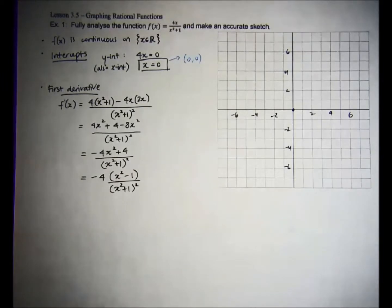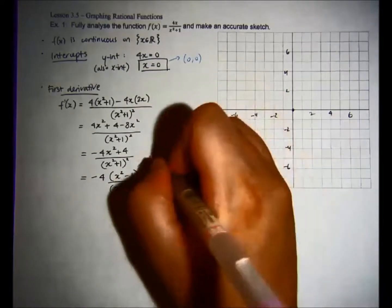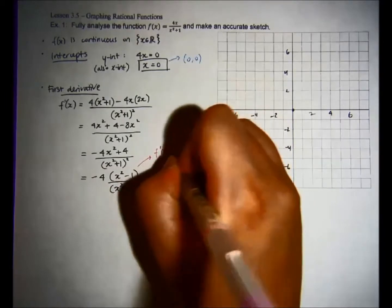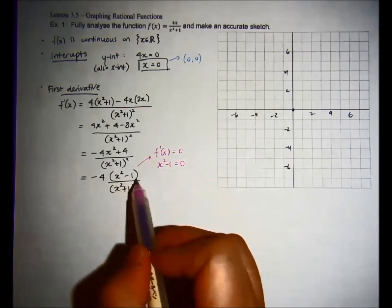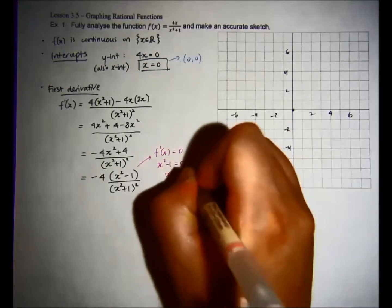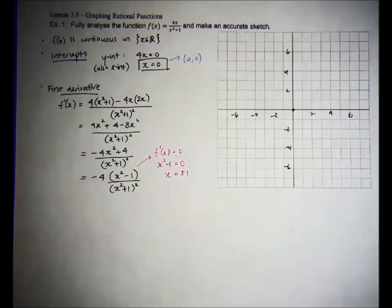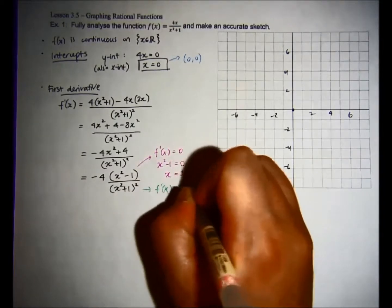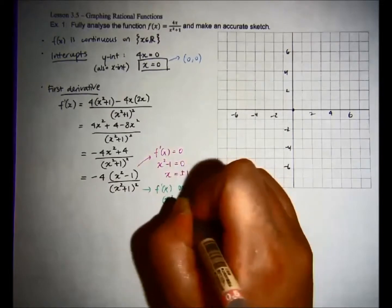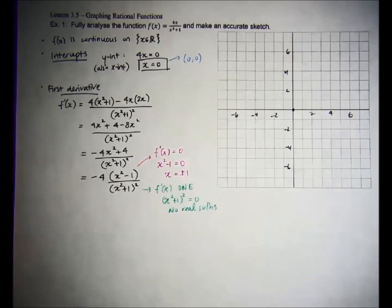At this point I want to figure out where my critical points are. Critical points exist where f prime equals 0, meaning the numerator has to equal 0. Negative 4 is just a coefficient, so we want x squared minus 1 equals 0, which means x equals plus or minus 1. The denominator x squared plus 1 squared will never equal 0, so our only critical points are at positive and negative 1.